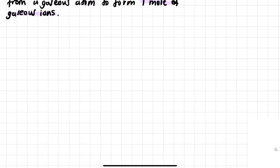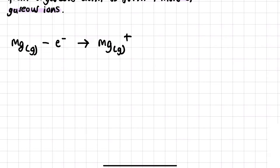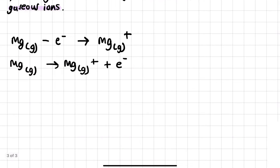Let's look at what this actually means using the example of magnesium in its gaseous state — that's really important. Magnesium has two electrons in the outermost shell because it is in group 2. So the first ionization energy would be removing one electron, and that would form magnesium plus. Because now it has one less electron, comparatively it has one more proton in the nucleus, so overall it has a plus one charge. In chemistry, we always write the electron on the other side where it's positive.